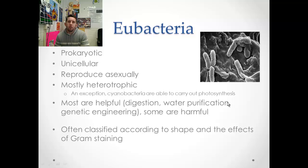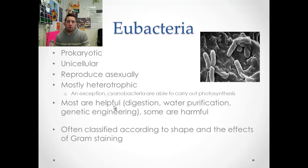In genetic engineering, you can splice genes into a bacterial plasmid and have them produce different proteins or enzymes for you. But some eubacteria are harmful as well — bacteria that cause strep throat, E. coli which can make you very sick, salmonella, and chlamydia. So while they're helpful in your gut to digest food, they can be harmful too. They're classified according to their shape: round, rod-shaped, or spiral-shaped — the spirochetes.